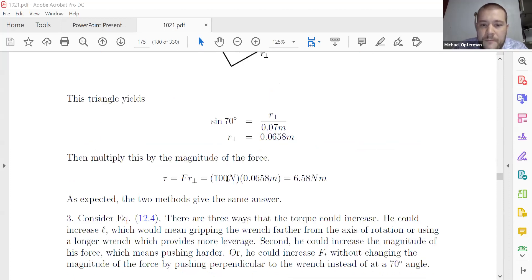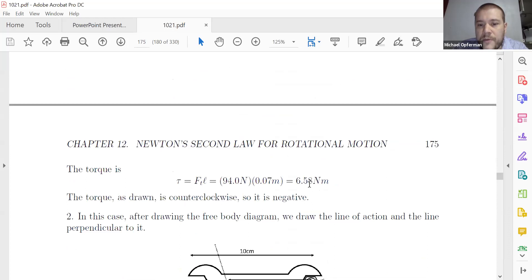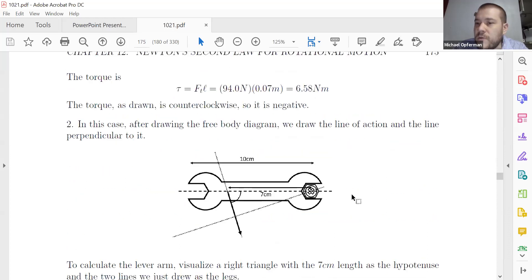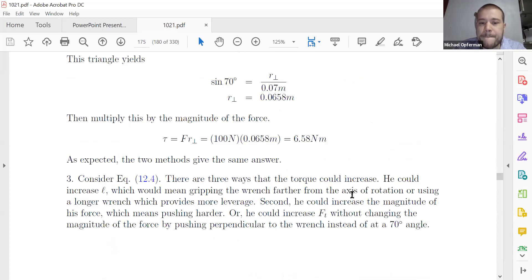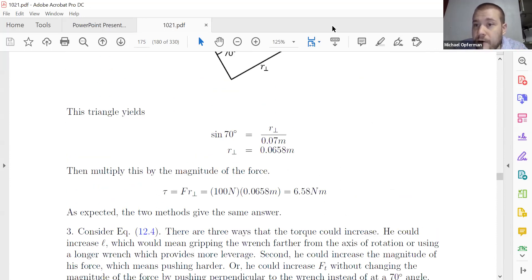So we calculate R perpendicular as seven centimeters times sine of 70. And then we multiply that by 100 newtons. And in both methods, you get there the same final answer, 6.58 newton meter. And up here again, 6.58 newton meter, either way. So that's the two different ways of calculating torque.